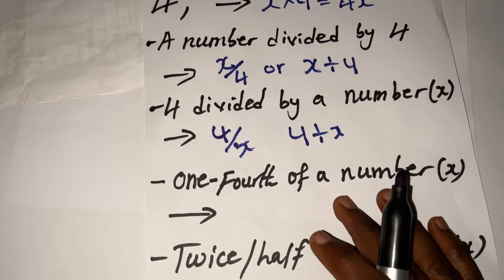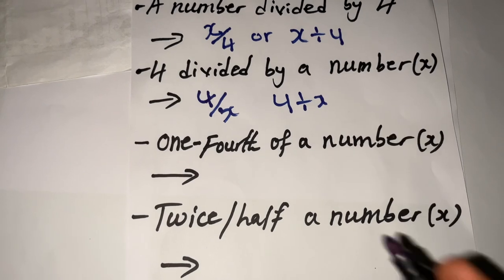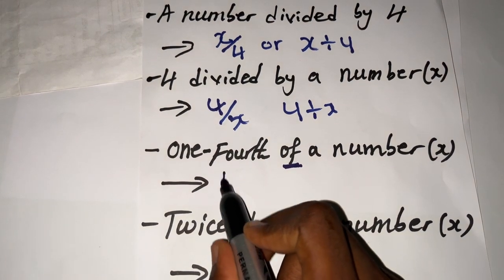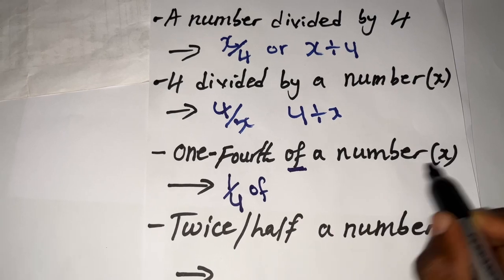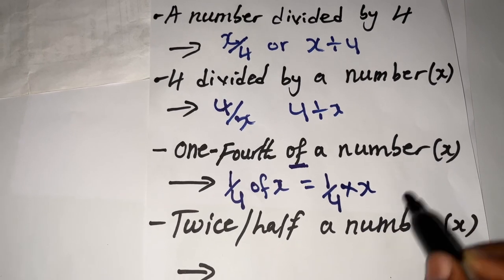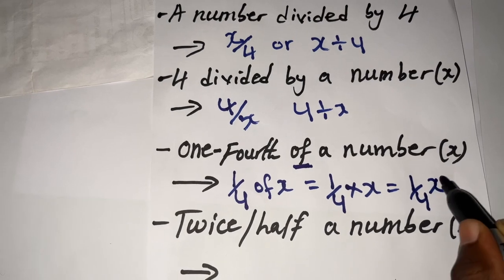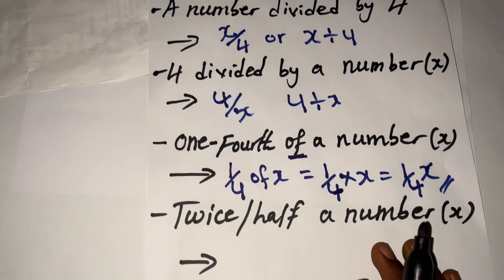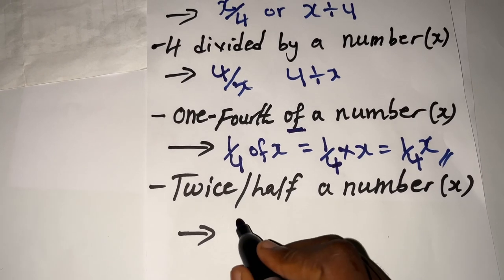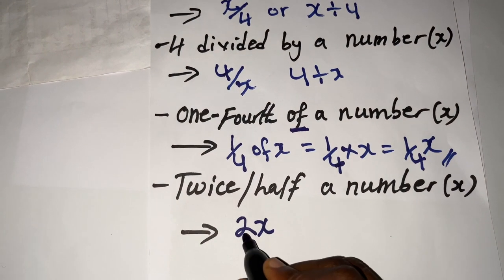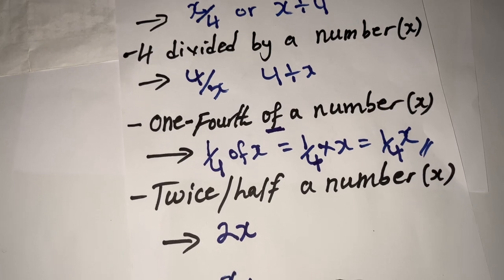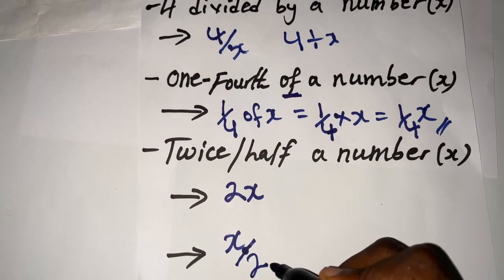Now I'll look at statements like 'one-fourth of a number.' When we say 'one-fourth of a number,' we write one over four multiplied by the number x, because the word 'of' is always interpreted as multiplication. So that gives us one-quarter times x, written as (1/4)x. For 'twice a number,' that means two multiplied by the unknown number, giving 2x. For 'half a number,' that means the number divided by two — you write the number first and then divide it by 2, giving x/2.